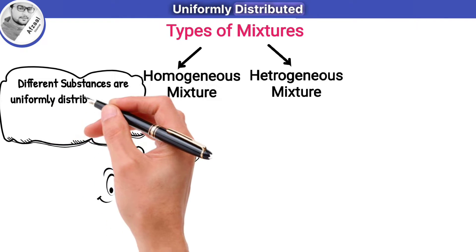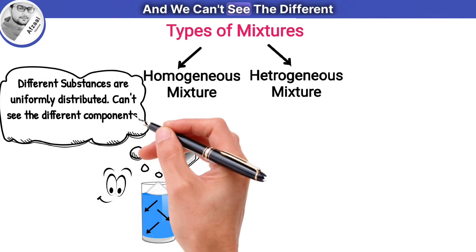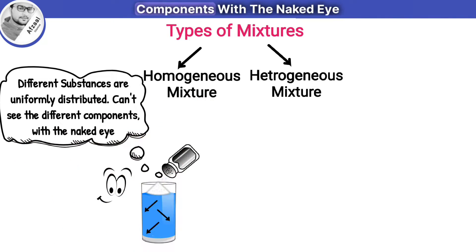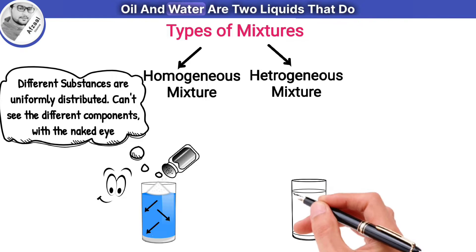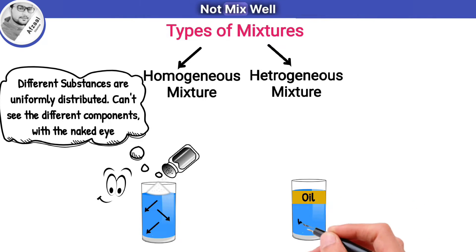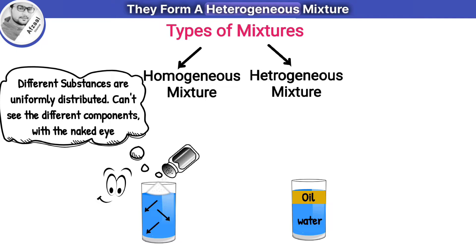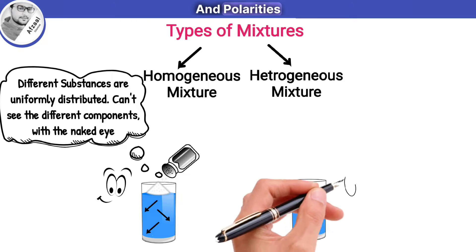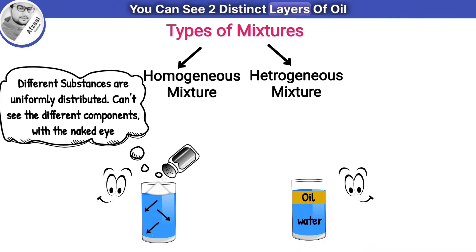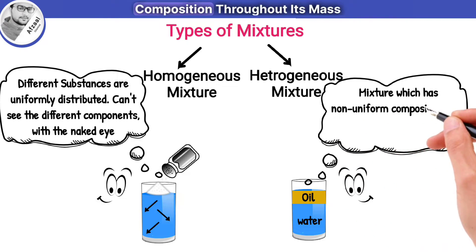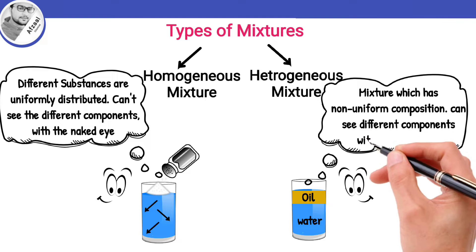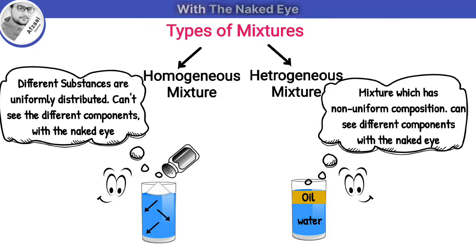Homogeneous mixtures are those where the substances are uniformly distributed and you can't see the different components with the naked eye. On the other hand, oil and water are two liquids that do not mix well — they form a heterogeneous mixture because they have different densities and polarities. You can see two distinct layers of oil and water. So heterogeneous mixtures have non-uniform composition throughout their mass, and you can see different components with the naked eye.